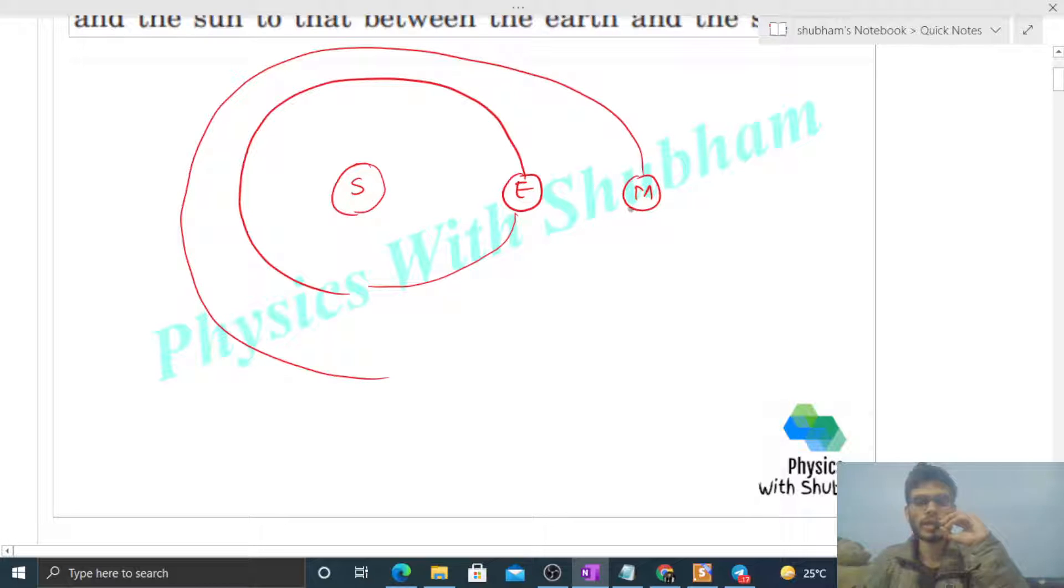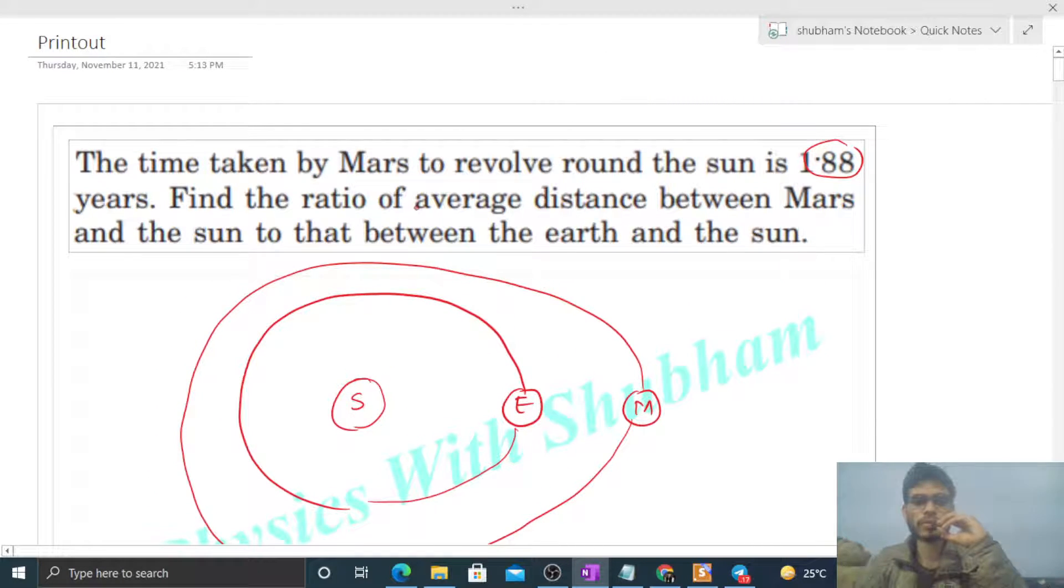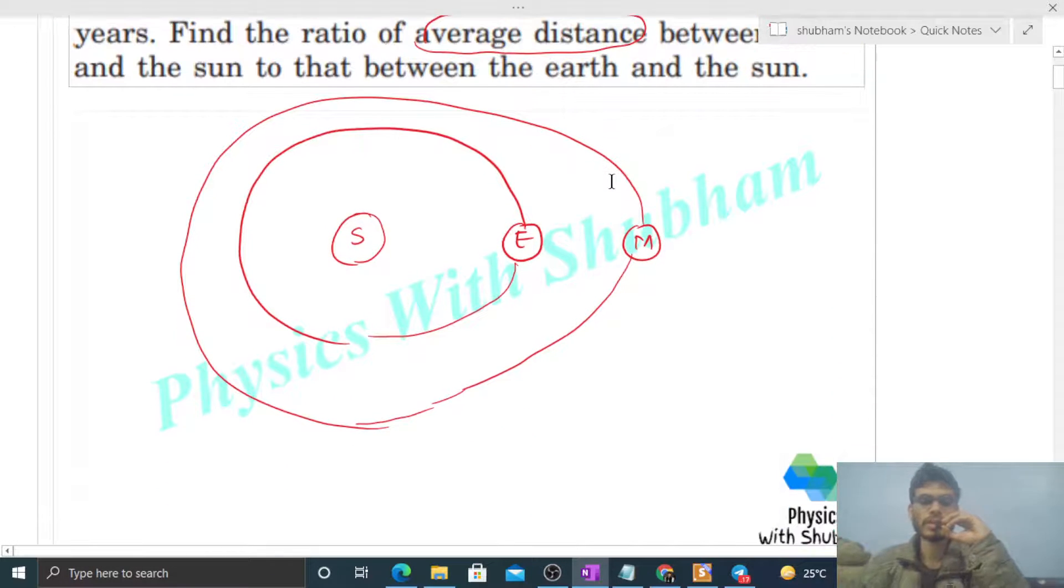Actually, orbits are elliptical, but I have taken it to be circular because what I want to find out is the ratio of average distance, and for average distance, I'm assuming this circular so that the radius will be constant.